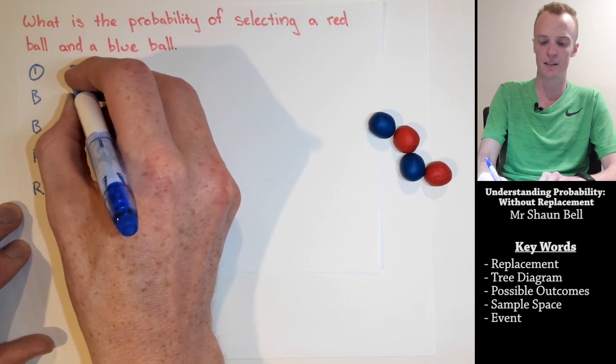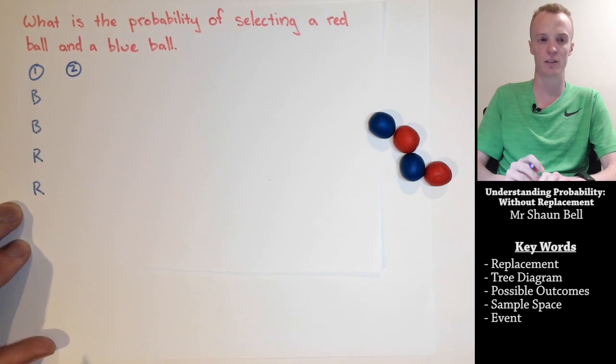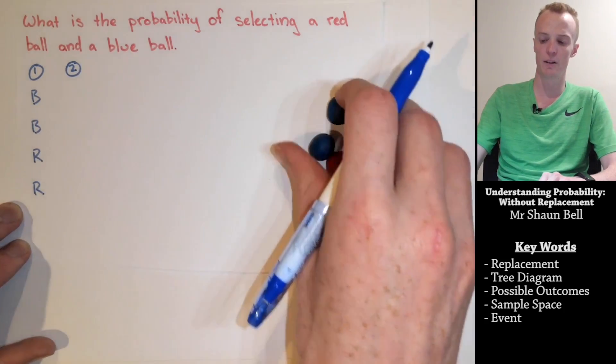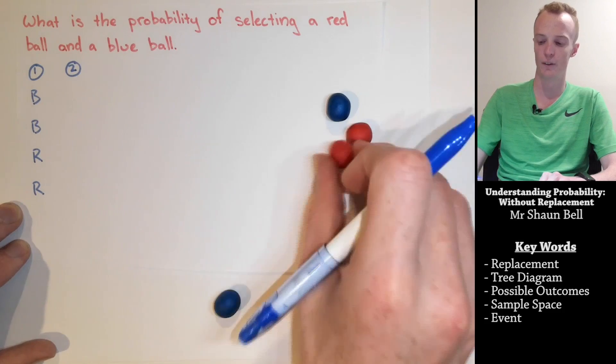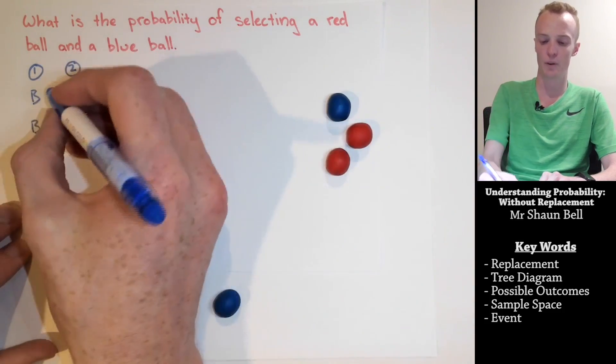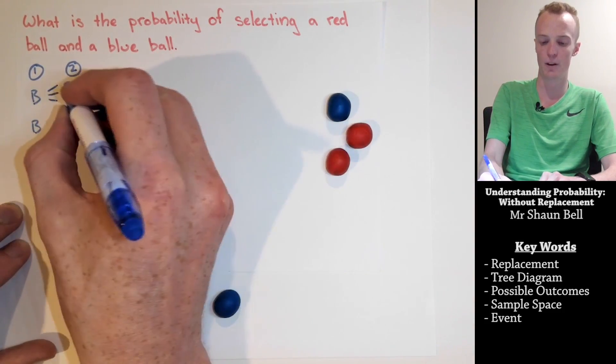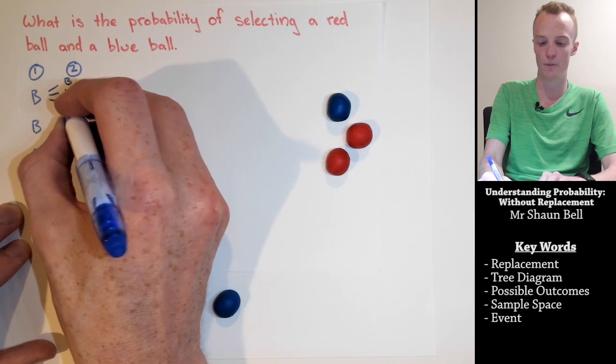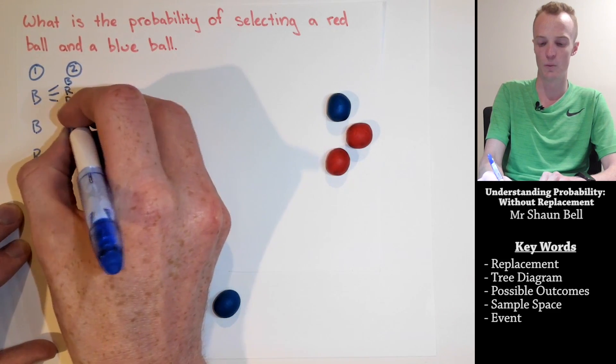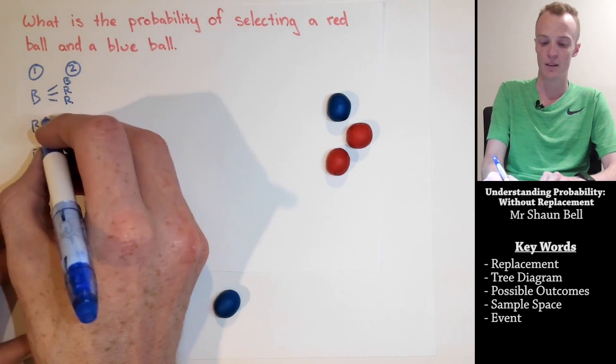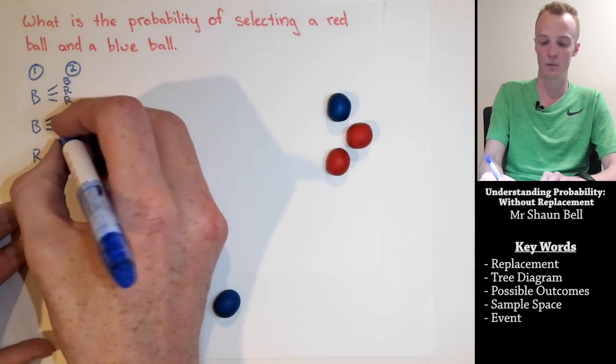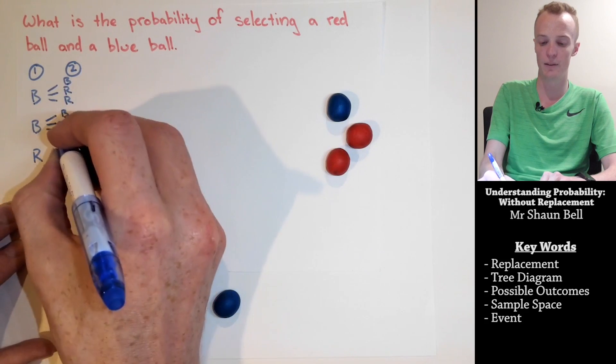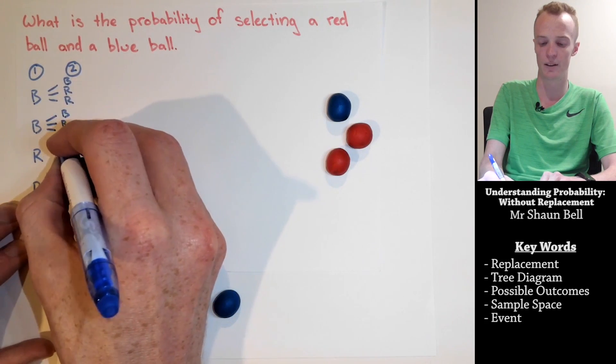In our second selection, it changes a little bit. So, considering my pool of balls, if I selected a blue ball first, the remaining balls could be one of three options, another blue ball or another one of the red balls. The same thing occurs if I select the other blue ball. I will still have a blue ball left and two red balls that I could select from.